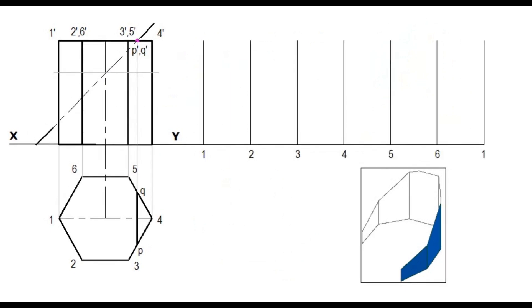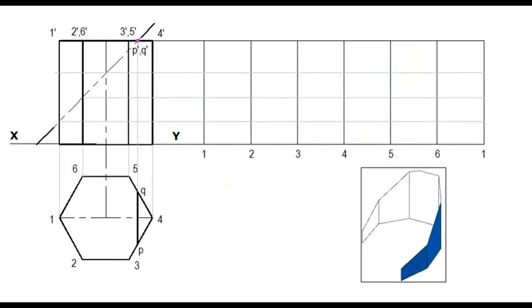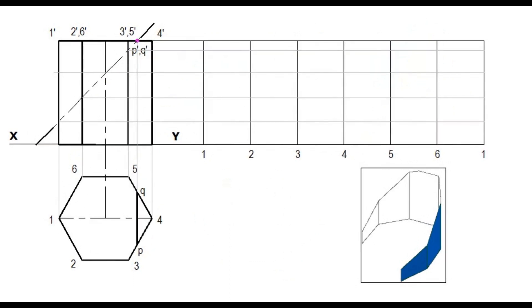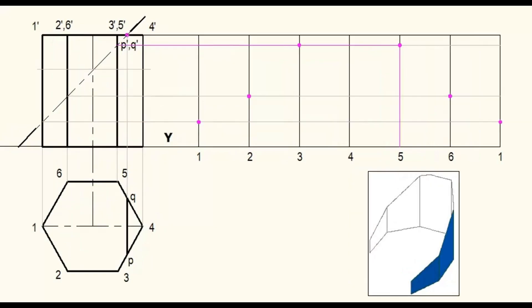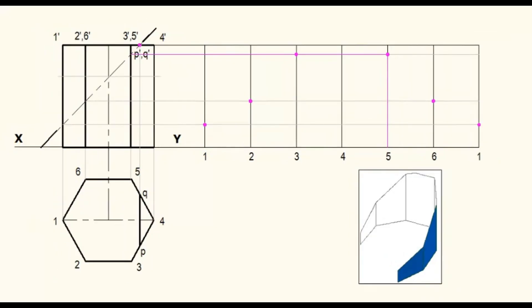Now project the points where the cutting plane cuts the prism. Identify the points on the development. For points P and Q, those distances can be measured from the base edge of the plan.